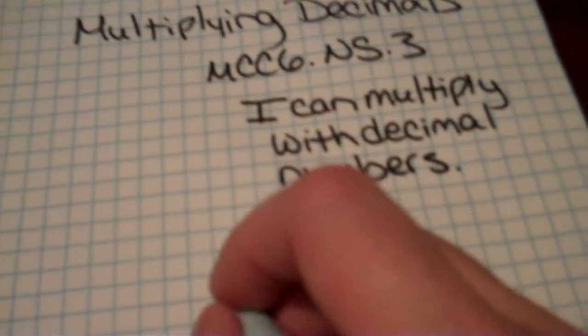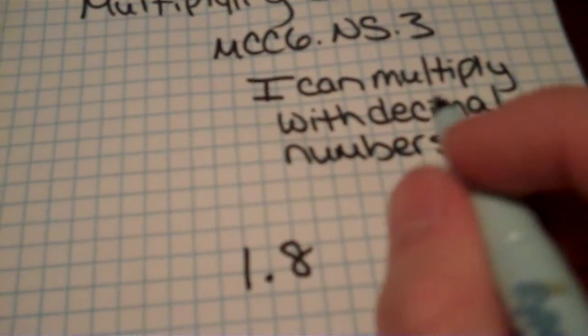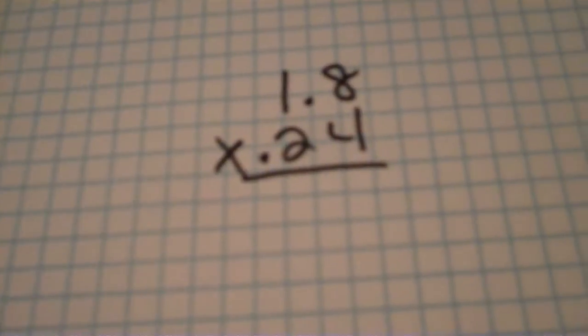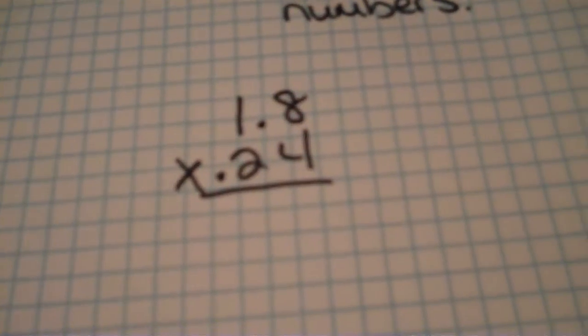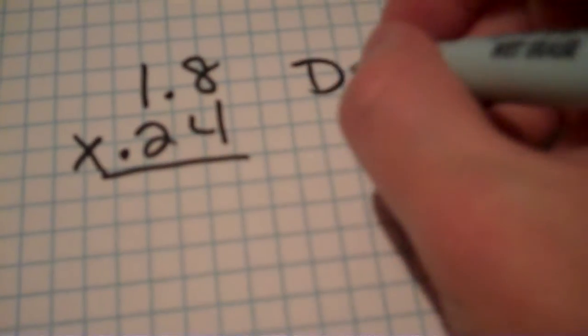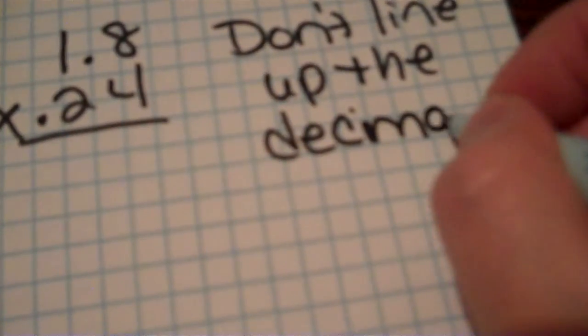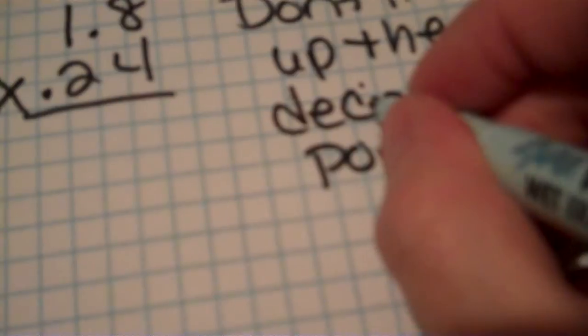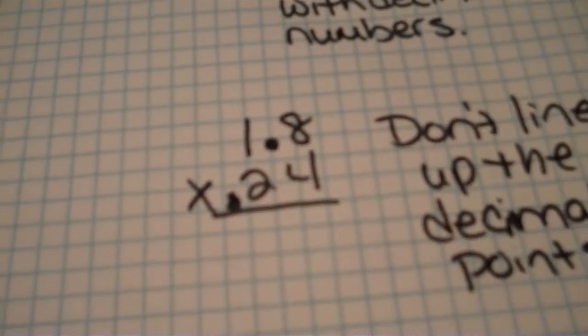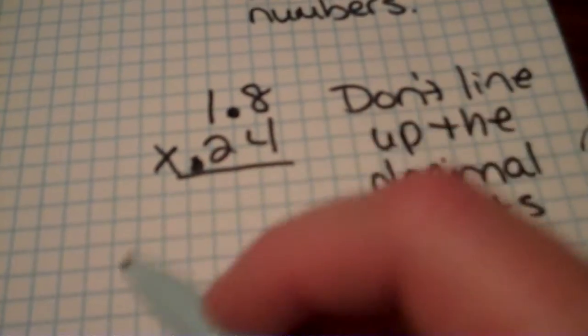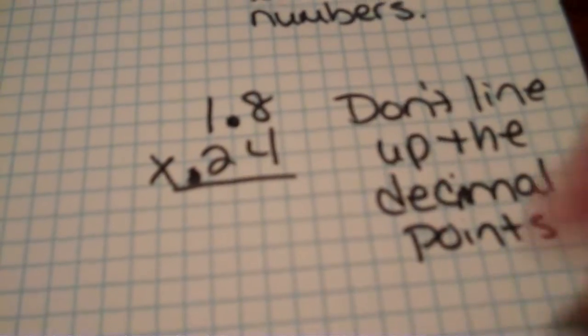All right so we're going to look at a problem. We're going to say 1.8 and 0.24. We're going to multiply these two numbers together. Now the difference between adding and subtracting and multiplication of decimals is you don't have to line up the decimal points. So right here you notice that the decimal points are not lined up. I'm going to multiply just like I would multiply 18 times 24. We're going to completely ignore the decimal points until after we've worked the problem out.